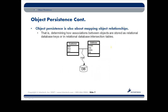Object persistence is also about mapping an object's relationships. Typically, our objects do not stand alone — they have relationships to other objects. In this case, customer to address. And exactly how do we get that relationship information persisted in the database? That's also part of object persistence.